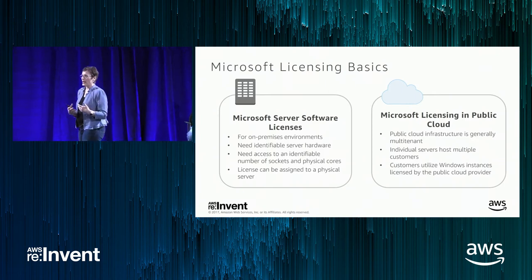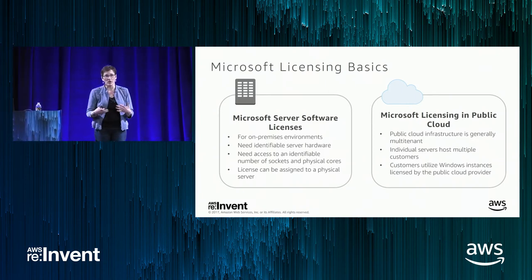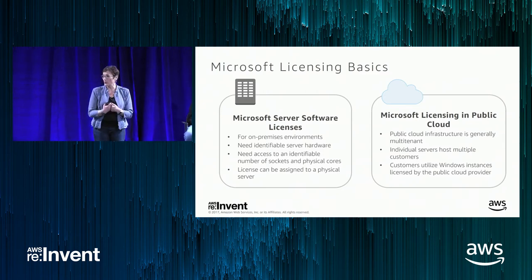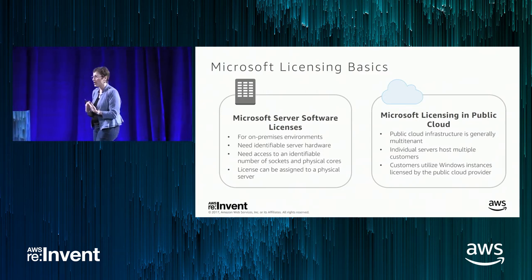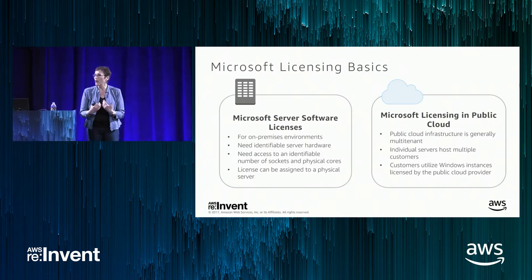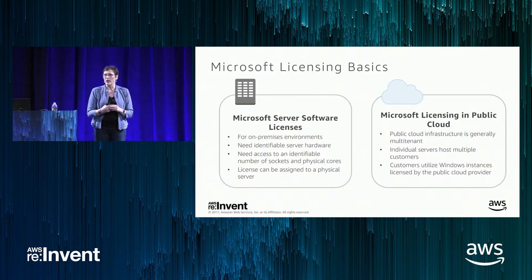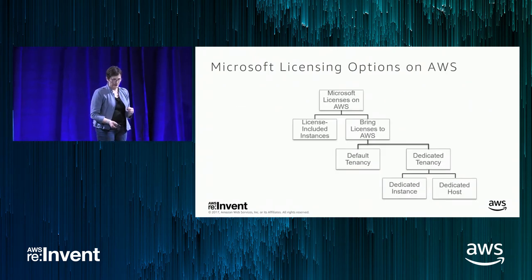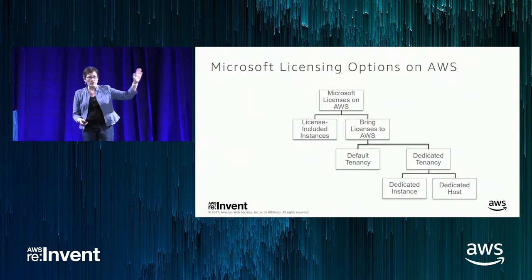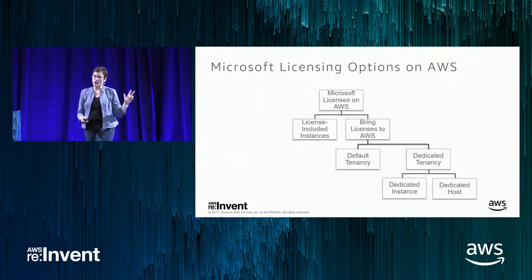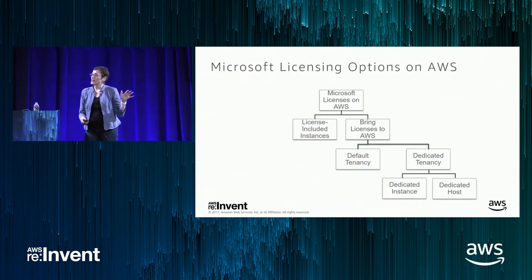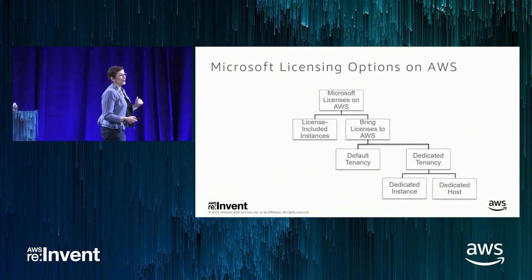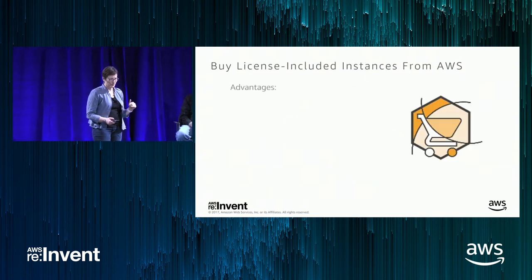The traditional way to think about licensing in a multi-tenant infrastructure in the cloud, where you have multiple customers sharing the server — Microsoft provides for partners like AWS. We are a gold partner of Microsoft and we offer licensing for Microsoft applications, as well as ways you can bring your own licenses to AWS.